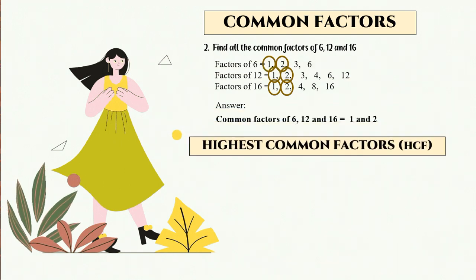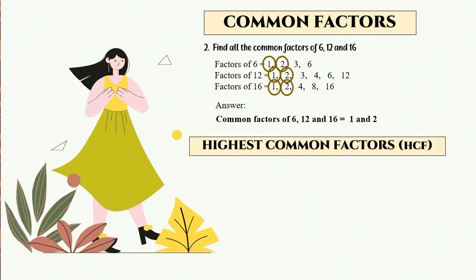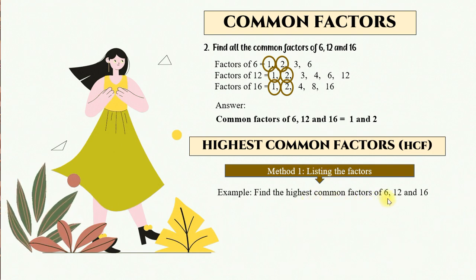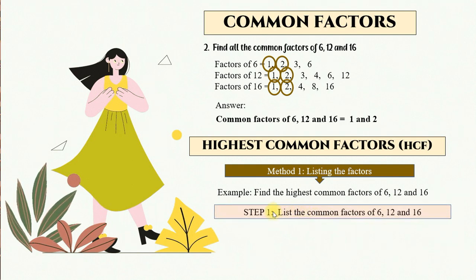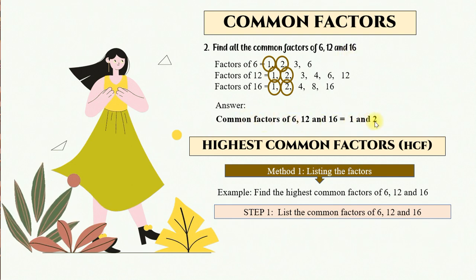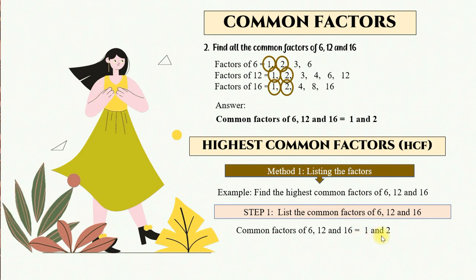Now we look at the Highest Common Factor, or HCF. Method 1: we use listing the factors. For example, find the highest common factor of 6, 12, and 16. What you do is list down the common factors of 6, 12, and 16. Taking the same example, the common factors are 1 and 2.